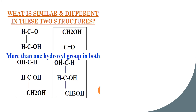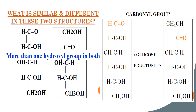If we compare the structures of glucose and fructose, there are similarities and differences. The similarity is that both are polyhydroxy compounds with many hydroxyl groups. The difference is the functional group — in glucose it is aldehyde, and in fructose it is ketone.